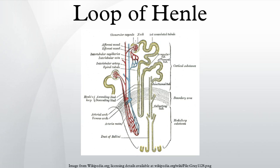The loop of Henle can be divided into four parts. The thin descending limb has low permeability to ions and urea, while being highly permeable to water.